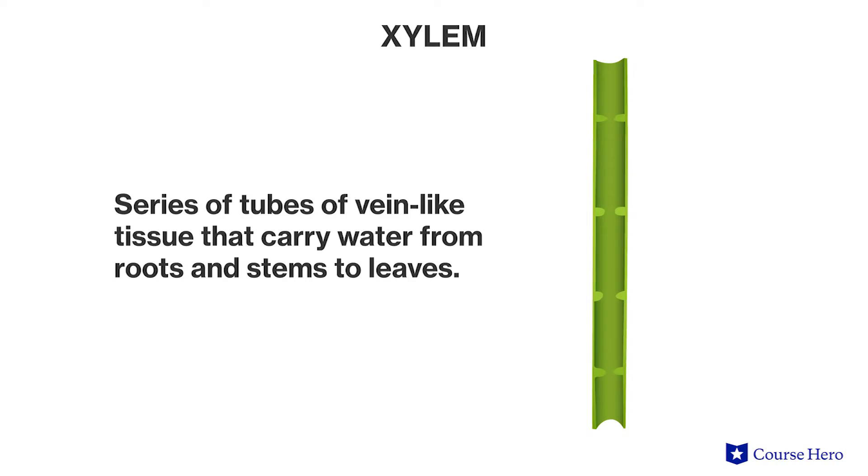Once water has been taken into the roots, it has to be transported to the different areas of the plant where it is needed, especially into the leaves. To do this, plants have evolved a series of tubes called xylem.